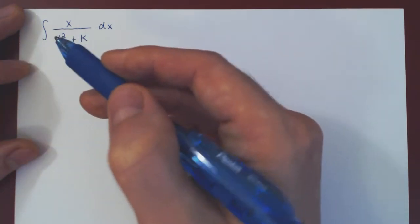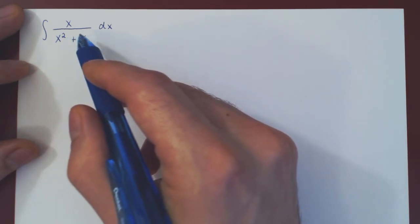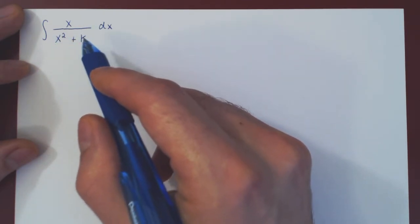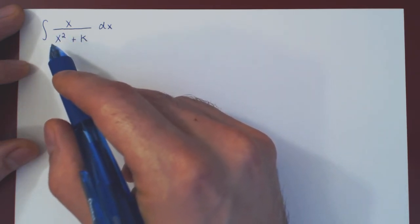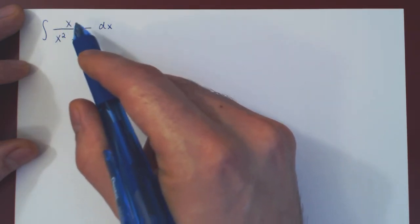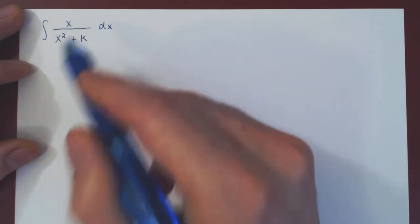And if you look, this is a very straightforward integration problem as our denominator is x squared plus k, the derivative of this with respect to x is 2x, up to a multiple of 2, this is just x which multiplies the expression.